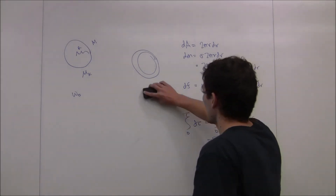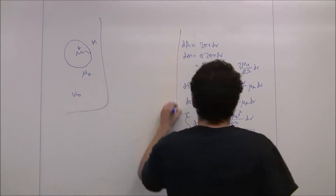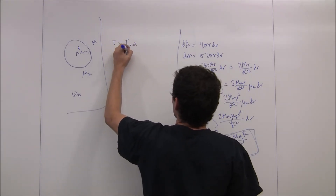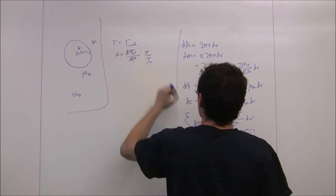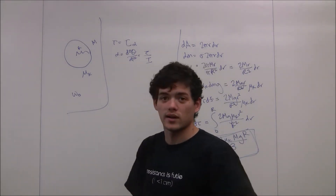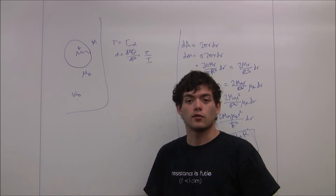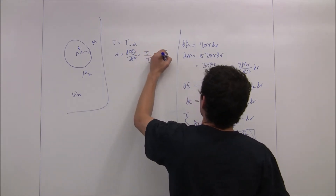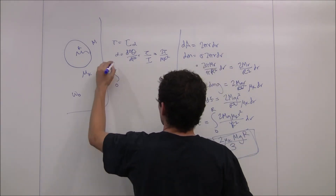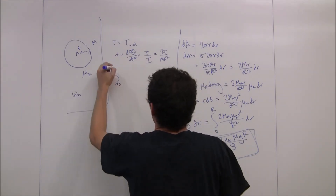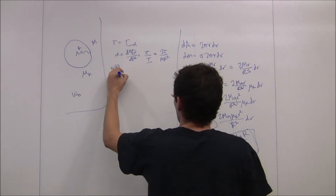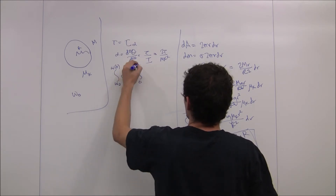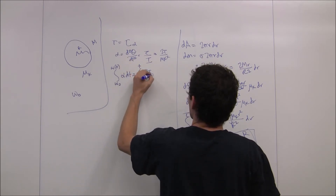Now we're going to calculate how long it will take for the hockey puck to stop spinning. We know that torque equals I alpha, so alpha equals d squared theta over dt squared equals torque over I. The hockey puck is a circle of uniform mass density, so I equals one half m R squared, giving us alpha equals 2 tau over m R squared. We take the integral from omega naught to omega at time t of alpha dt equal to the integral from 0 to t of 2 tau over m R squared dt.